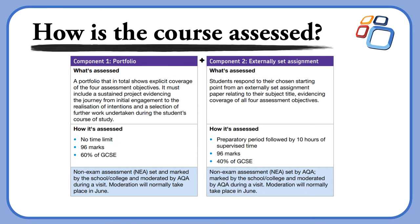In terms of assessment: 60% is the coursework portfolio, component one, which is a body of work and a final piece. 40% of the overall GCSE is component two, which is a set assignment from AQA where they give you a word and you do a whole project around that word, producing a body of work and a 10-hour exam.